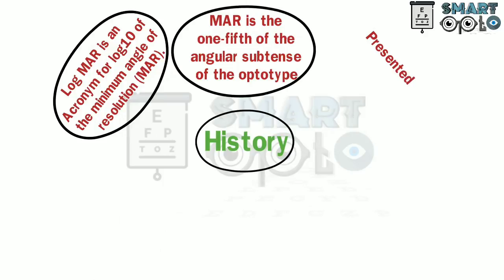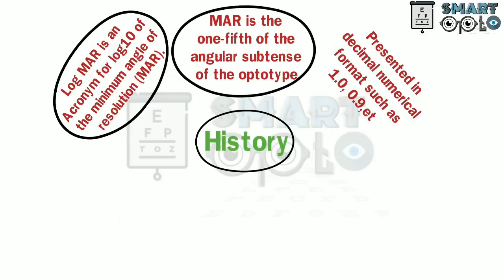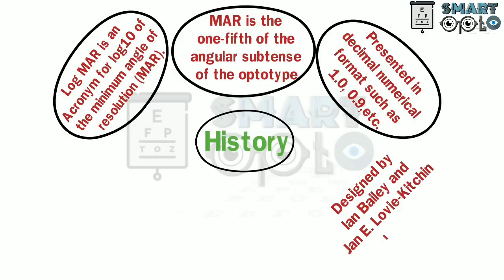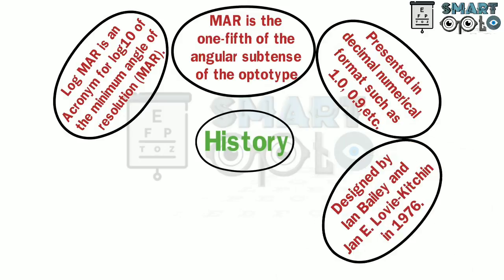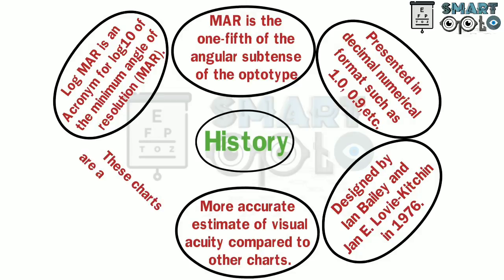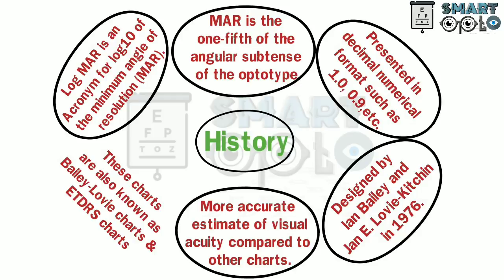The LogMAR visual acuity is presented in decimal numerical format, such as 1.0, 0.9, etc. The LogMAR charts were designed by Bailey and Lovie-Kitchin in 1976. The LogMAR visual acuity charts are also known as Bailey-Lovie charts and ETDRS charts.